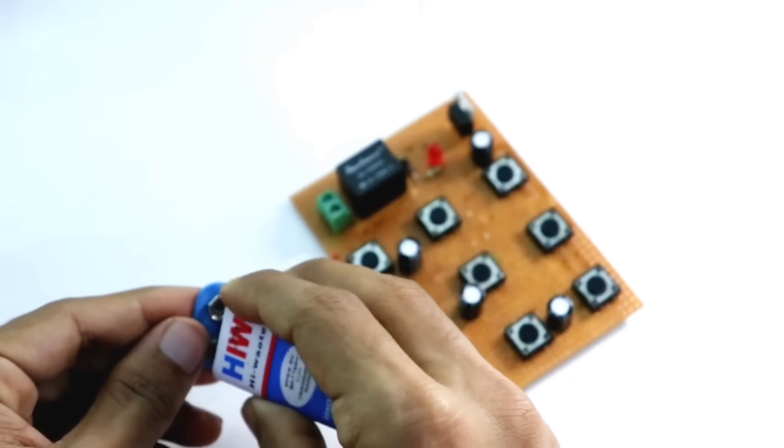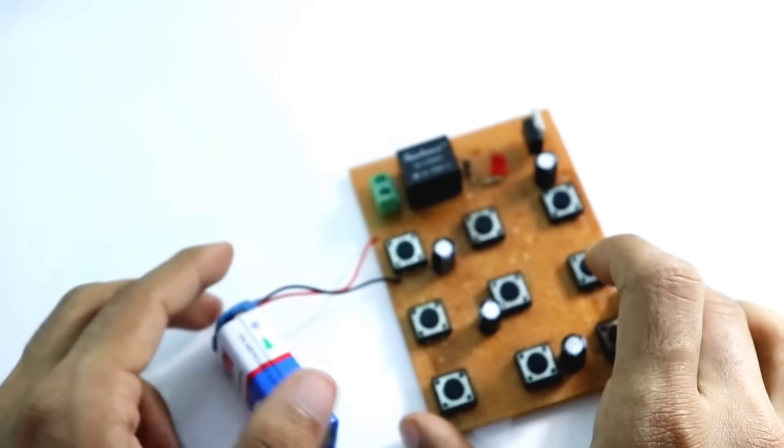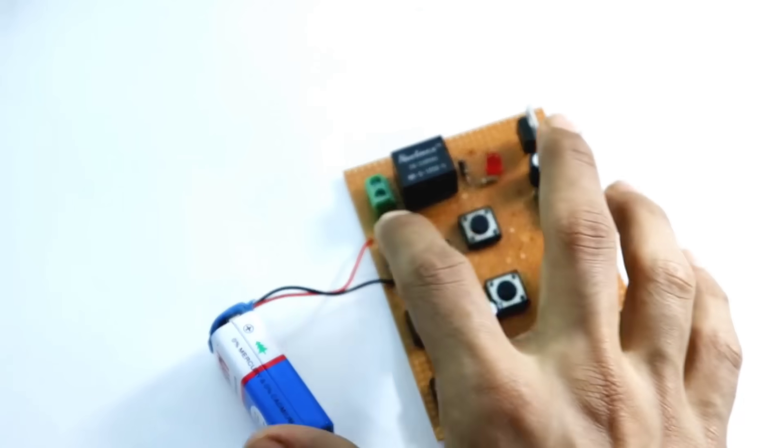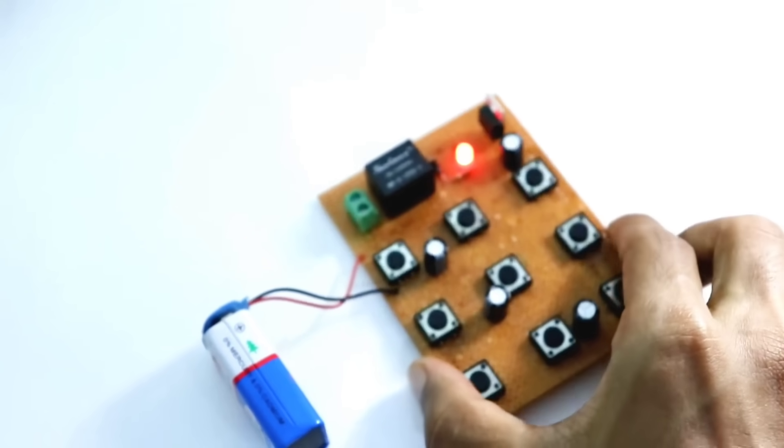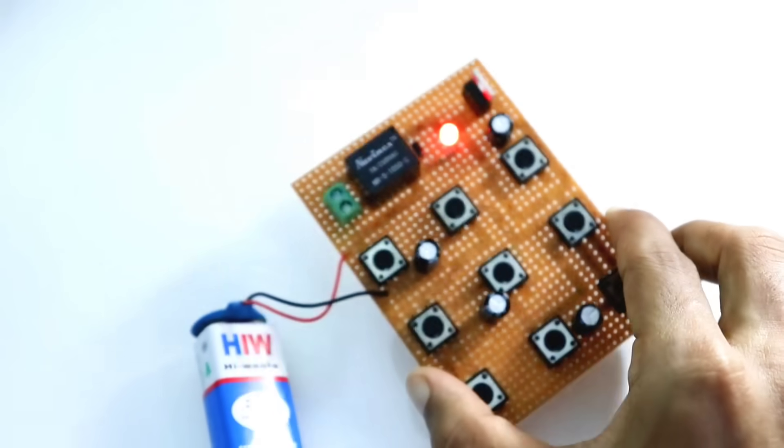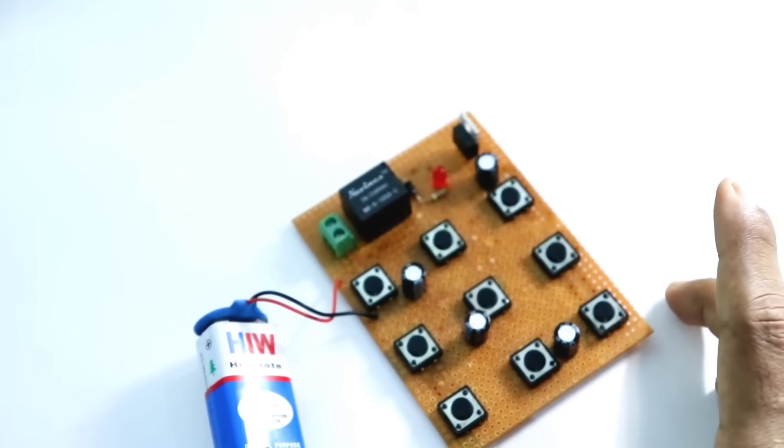Circuit testing. Once the wiring was done, I moved on to testing the circuit. As soon as I powered it on and entered any random password, something interesting happened. The red LED turned ON immediately. This is a clear indication that the circuit is functioning perfectly, just as intended.